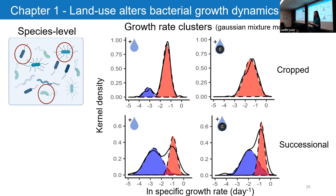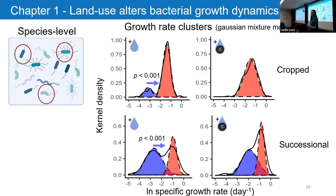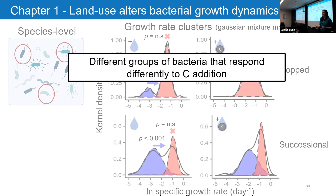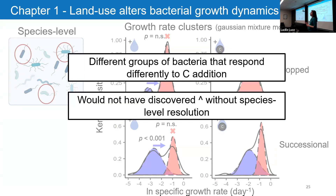To look at this more statistically, I used Gaussian mixture modeling — a way to test if a distribution is best fit by multiple normal distributions. I found that in most of my treatments, distributions were best described by two normal distributions rather than just one, with the cropped water treatment being the odd one out. Using these clusters, I could see that the slower group tended to shift upward in growth rate when carbon was added, but the faster group didn't. This shows that different groups of bacteria can respond differently in their growth metrics when given food — something we wouldn't have known by just looking at the community in aggregate.